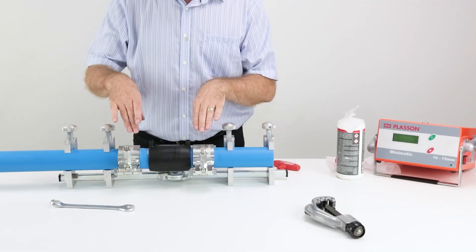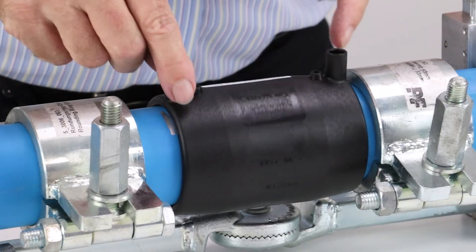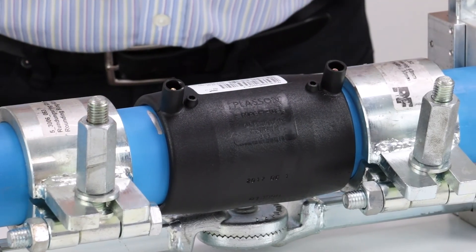Now we've got the fitting slotted in, it's time to check how long we need to weld and cool for. This info can be found on the barcode label on the fitting.